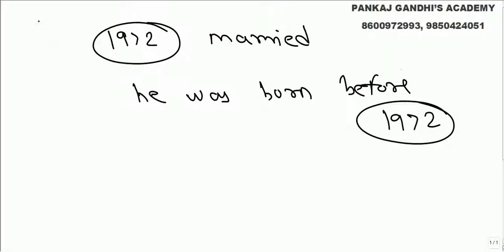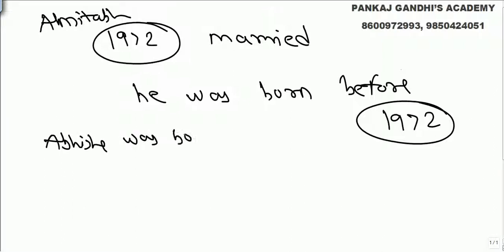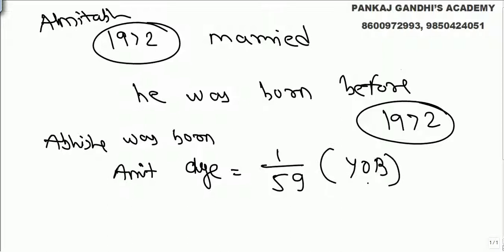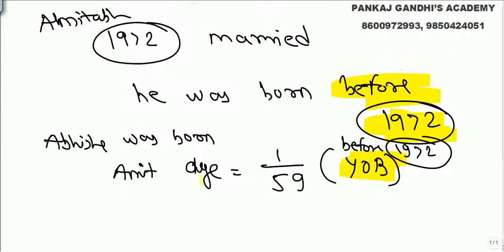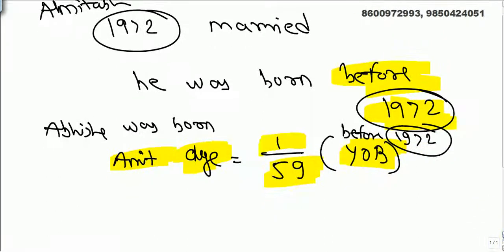The question says Amitabh got married in 1972, so obviously he was born before 1972. When Abhishek was born, Amitabh's age was equal to 1/59th of his year of birth. His year of birth is before 1972, so whenever we say Amitabh's age when Abhishek is born, it was 1/59th of his year of birth.